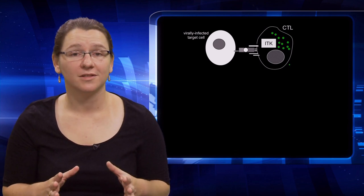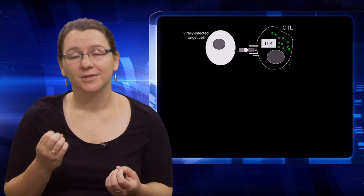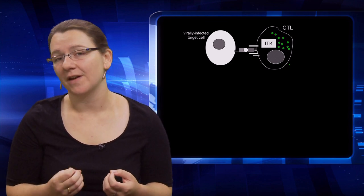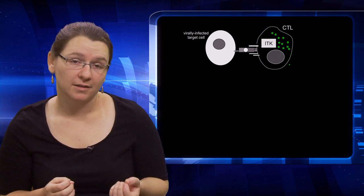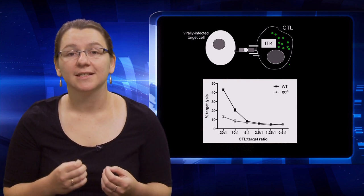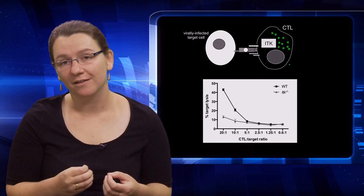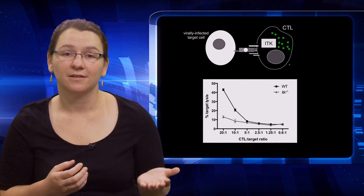But like many primary immunodeficiencies, the cellular and molecular mechanisms behind this particular sensitivity to viral infections is not well understood. Using a mouse model of immunodeficiency, we find that the loss of ITK leads to reductions in the ability of CTLs to kill virally infected target cells, as shown in the y-axis in the figure to my left.